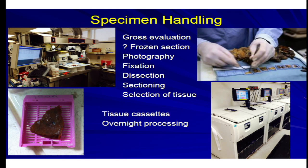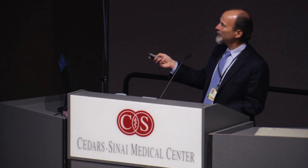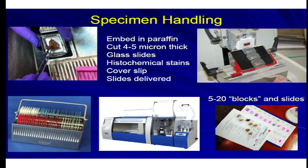At that point, we do photography, tissue fixation, and over the next few hours we dissect the specimen, analyze it, and take representative sections of the tumor, putting them into little capsules called cassettes, then process them overnight in tissue processors. The next morning the tissue is taken out and manually placed into tissue cassettes filled with paraffin wax, embedded into wax molds, and very thin sections — four to five microns — are cut with special microtomes.